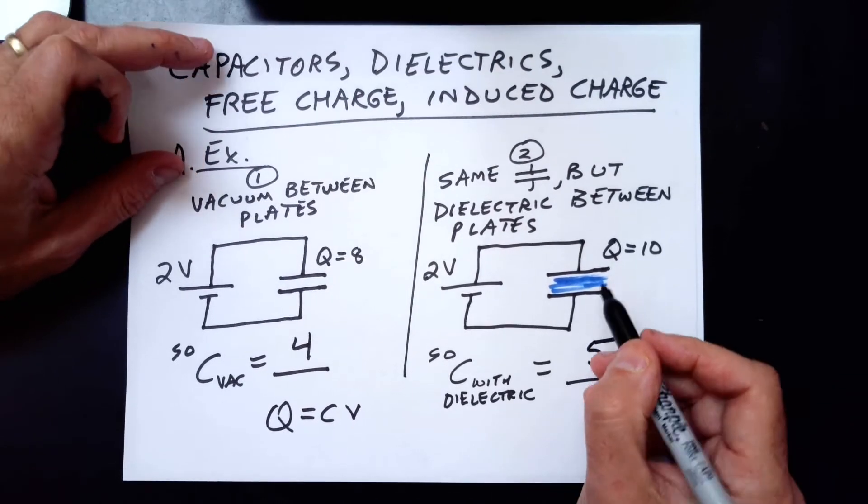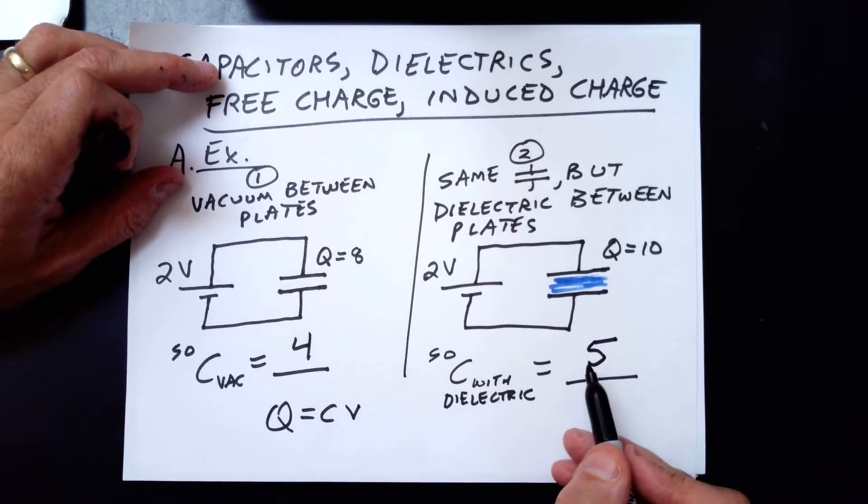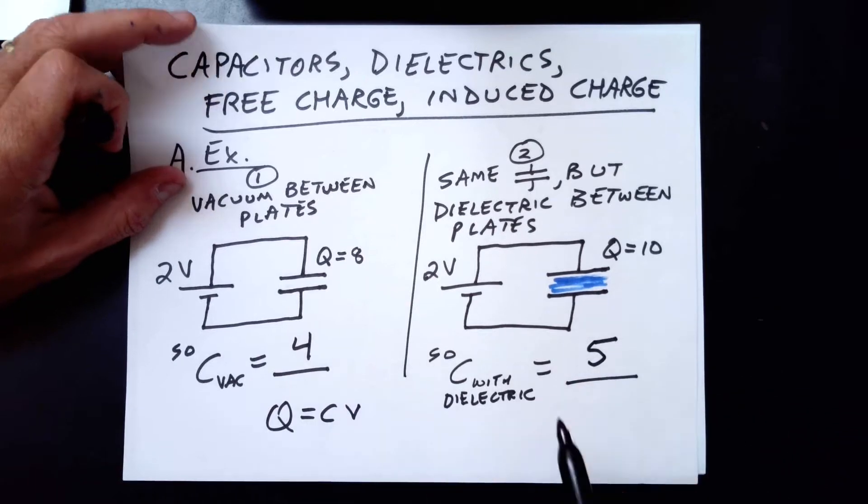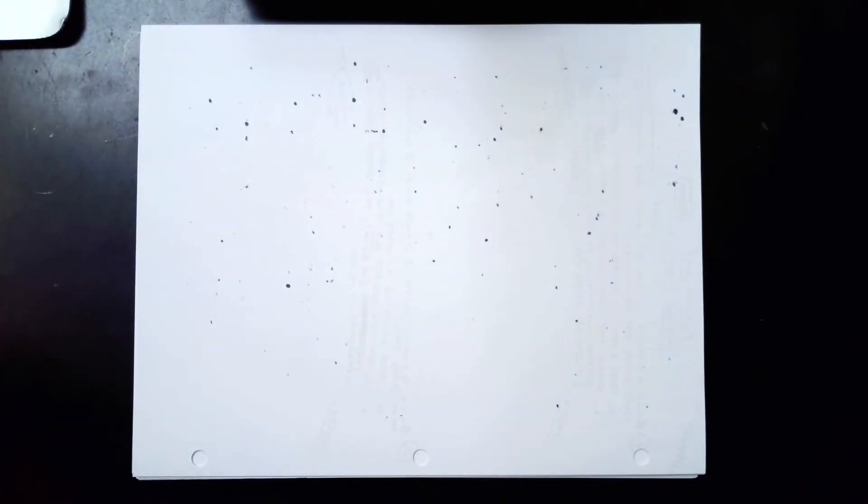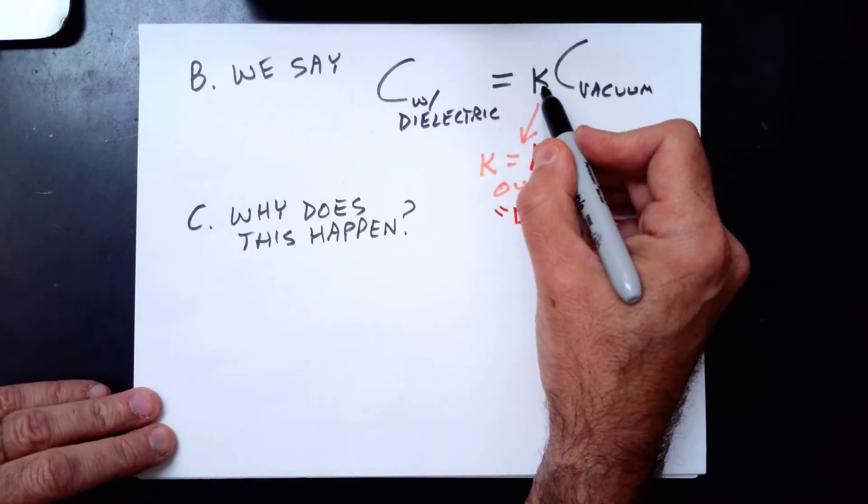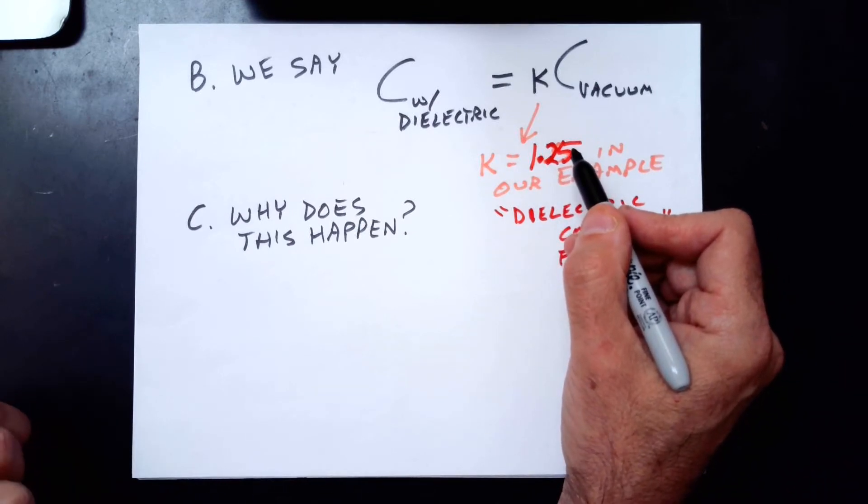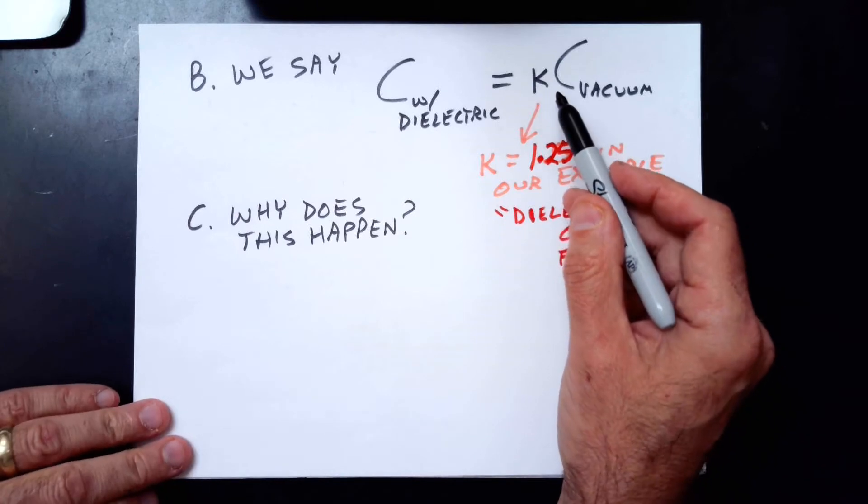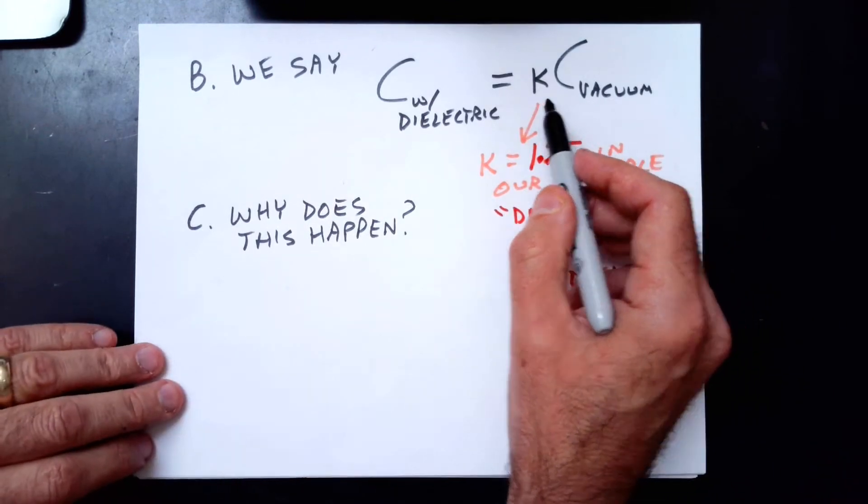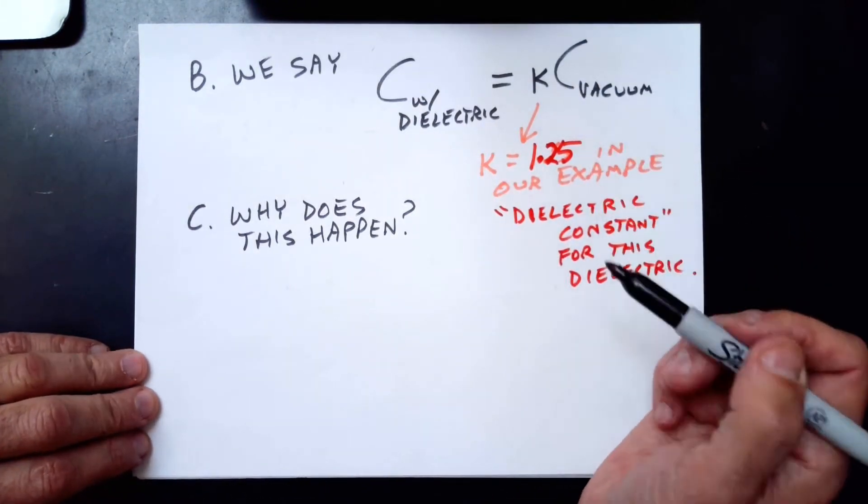And so the capacitance has gone from 4 to 5. It's increased. When you insert a dielectric, the capacitance will always increase. It will never go down. And with a different dielectric, this might go from 4 to 10, or even 4 to 30. So different materials create different multipliers. We sum that all up this way. We say that the capacitance with the dielectric is a multiple of the capacitance with no dielectric. And that multiplier is called the dielectric constant. In our particular example, it was 1.25. And it's different for different materials. It doesn't matter. If you change the voltage, this relationship still holds. The multiplier depends only on the material you insert.